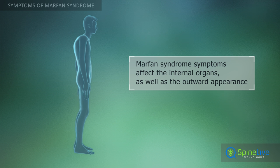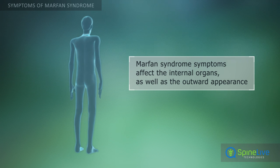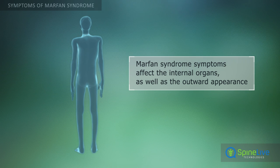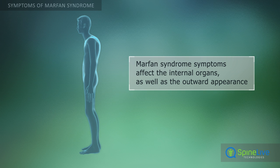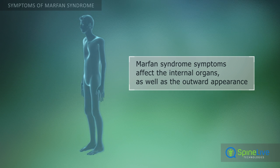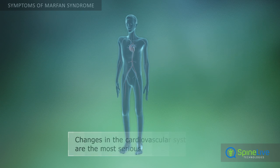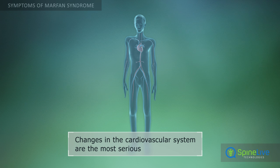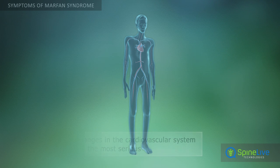Marfan syndrome is a genetic disorder affecting connective tissues. This means the typical symptoms affect not only external features but internal organs too. The condition impairs the cardiovascular system the most, and changes caused by Marfan syndrome may sometimes be fatal.